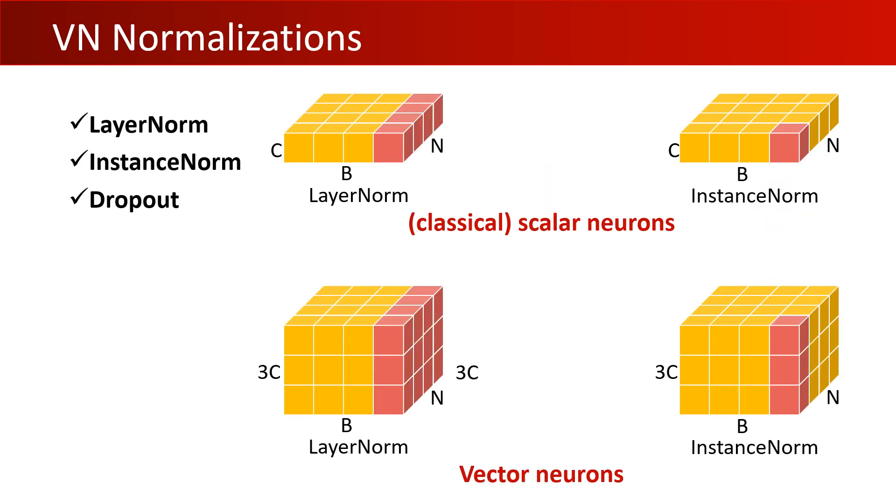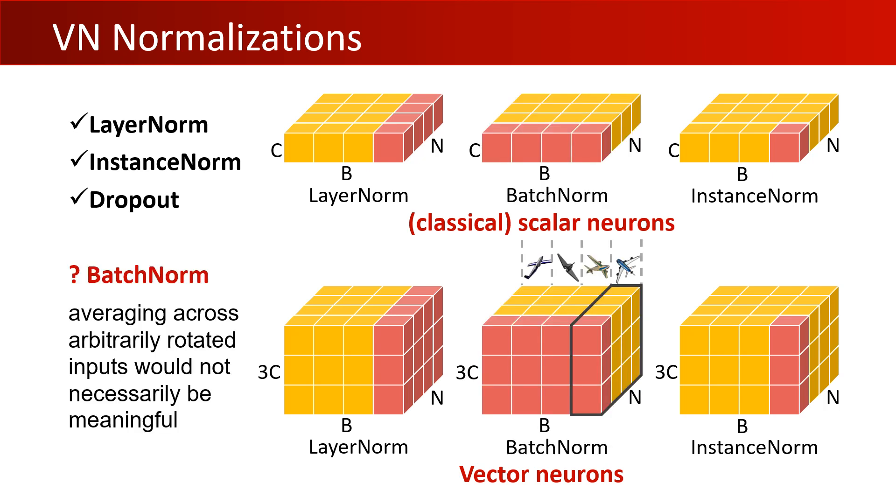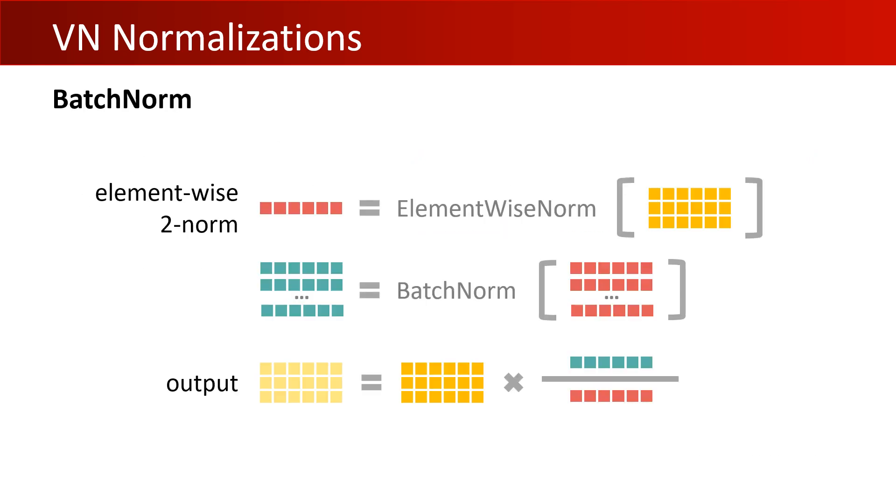Normalizations often give rise to significant performance improvements. Layer and instance normalizations are done per sample, and thus can be trivially generalized to VN networks, where the distributions are normalized with respect to vector distributions in R^3. In contrast, batch normalization aggregates statistics across all batch samples. While technically possible, in the context of rotation equivariant networks, aggregating across arbitrarily rotated inputs would not necessarily be meaningful. We instead apply batch normalization to the invariant component of the vector-list features, by normalizing the L2 norms of the vector-list features.